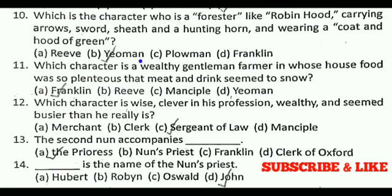The correct answer is A, that is the Franklin. Next question: Which character is wise, clever in his profession, wealthy, and seemed busier than he really is? The correct answer is C, that is the Sergeant of Law. Next question: The Second Nun accompanies — the correct answer is A, that is the Prioress. Question 14: Dash is the name of the Nun's Priest. The correct answer is D, that is John.